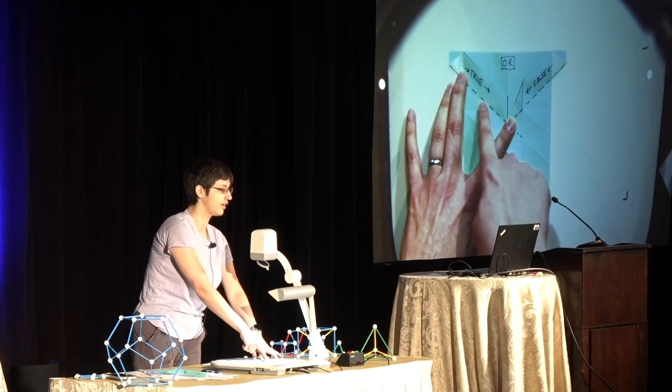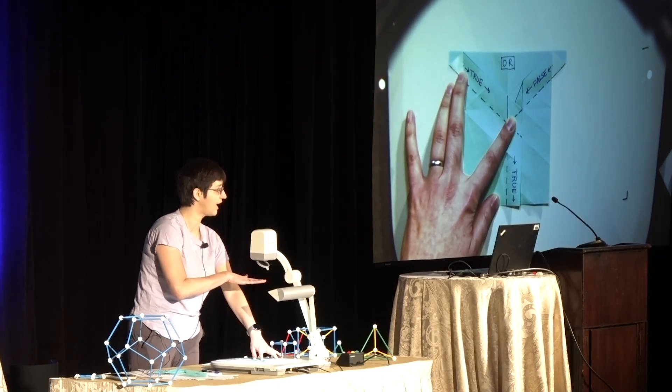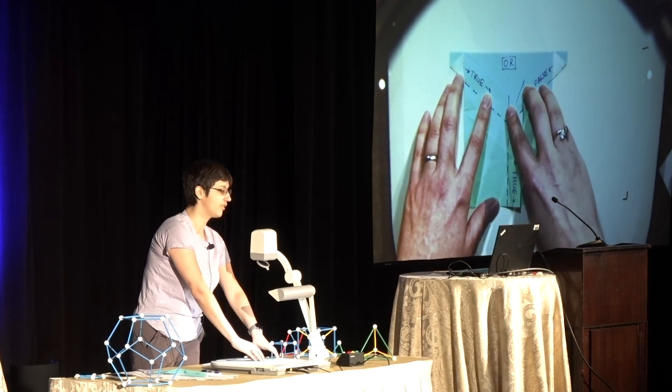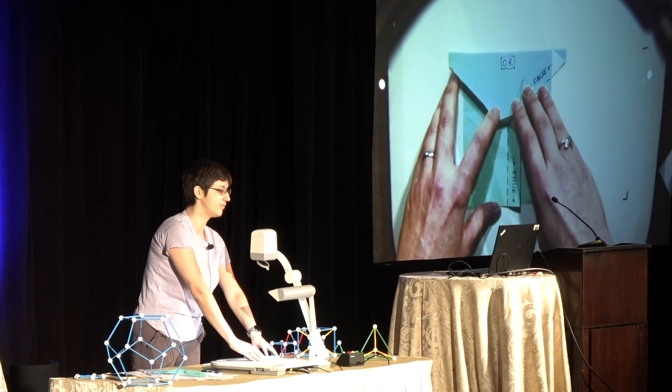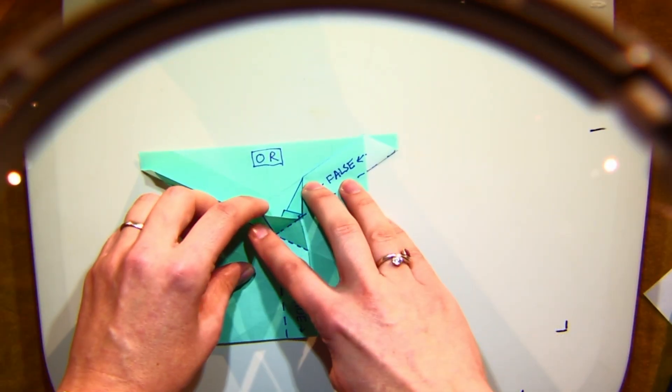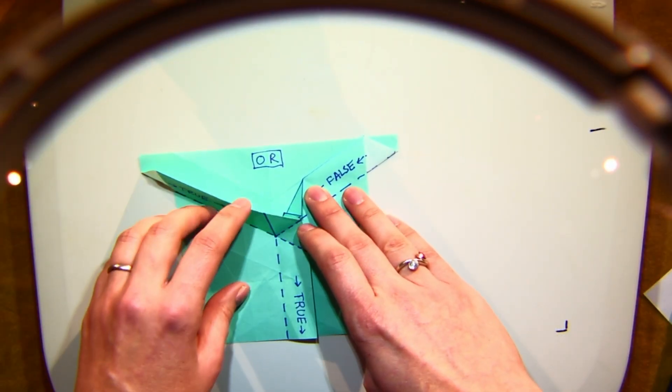So the rule is that the dashed lines, it has to be either flat, not folded at all, or it has to be a valley fold. And the solid lines, it can be not folded, but it has to be a mountain fold. It cannot fold in this direction because this is marked this way. This is how the rules work.